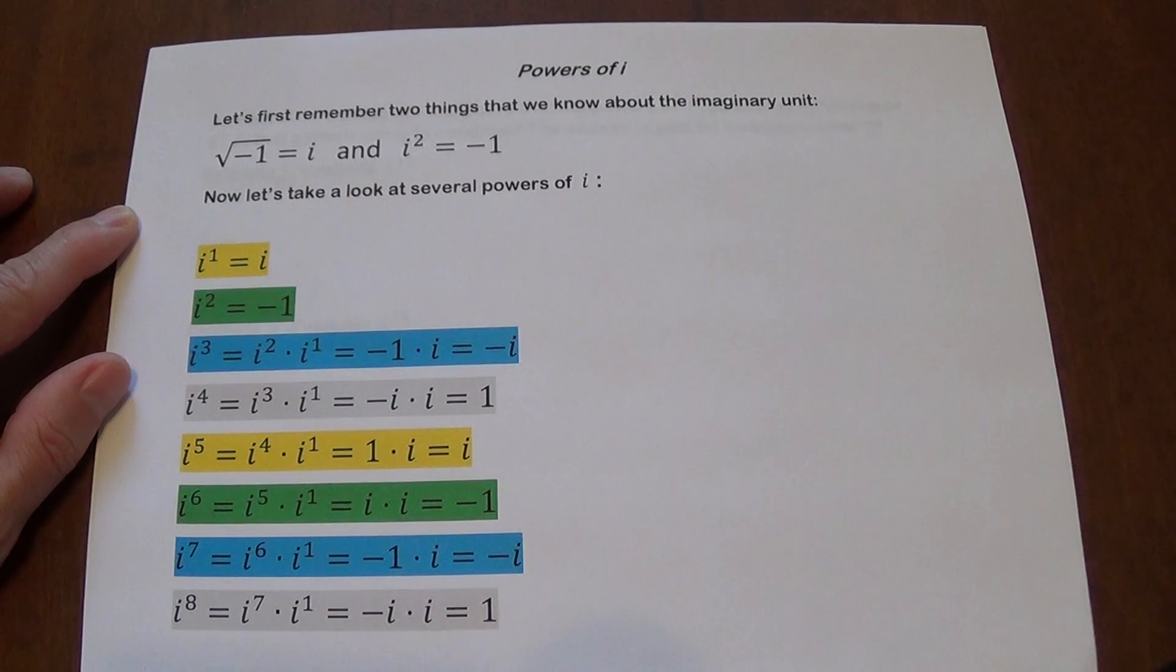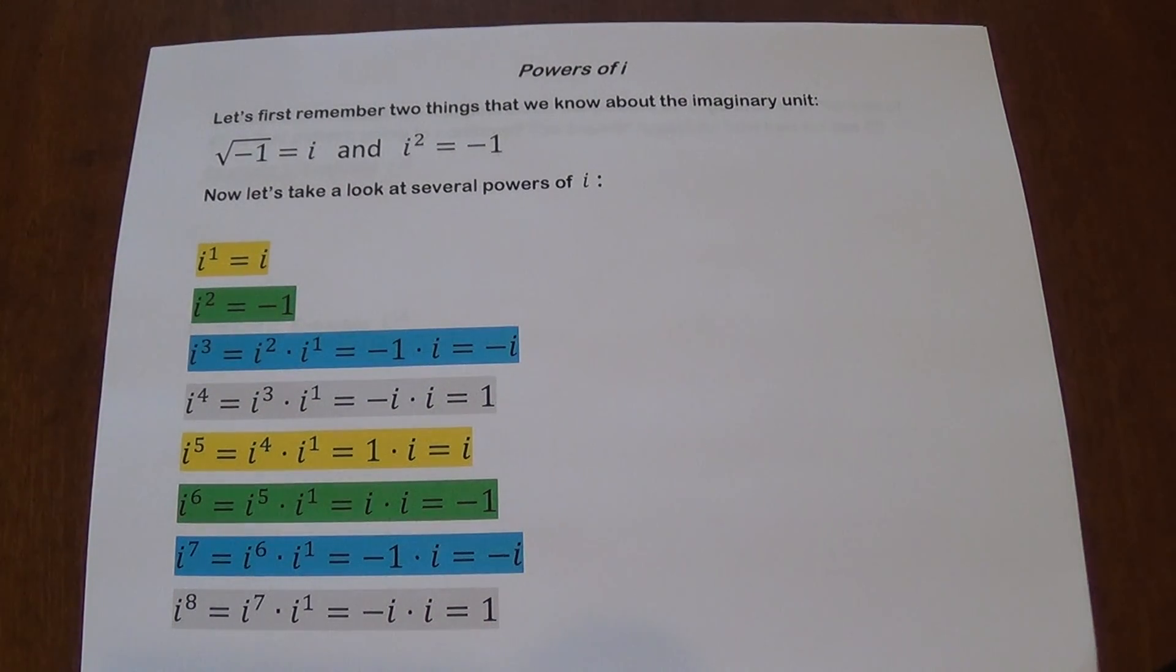What happens when we try to go to i to the third? i cubed can be broken down as i squared times i to the first. This is using properties of exponents. i squared is negative one, i to the first is i, so we're going to get negative i.